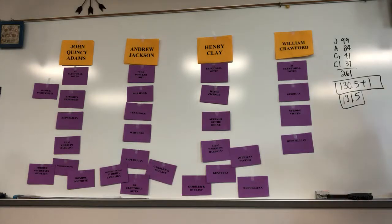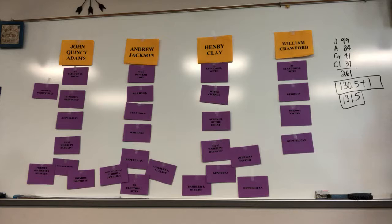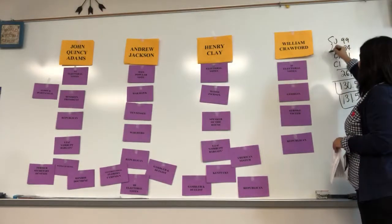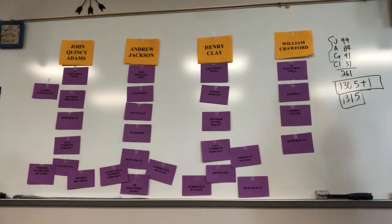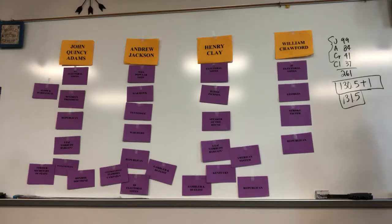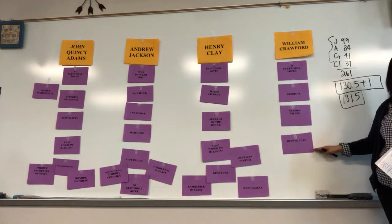By the Constitution, when no one wins a clear majority in the Electoral College, the election goes to the House of Representatives. By the 12th Amendment, the House chooses from the top three candidates: Jackson, Adams, and Crawford. However, Crawford has a stroke, so he can't carry out the role — Crawford is done.